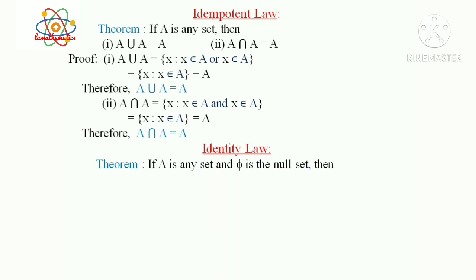If capital A is any set and ∅ is the null set, then: first, A union ∅ equals A; second, A intersection U equals A.